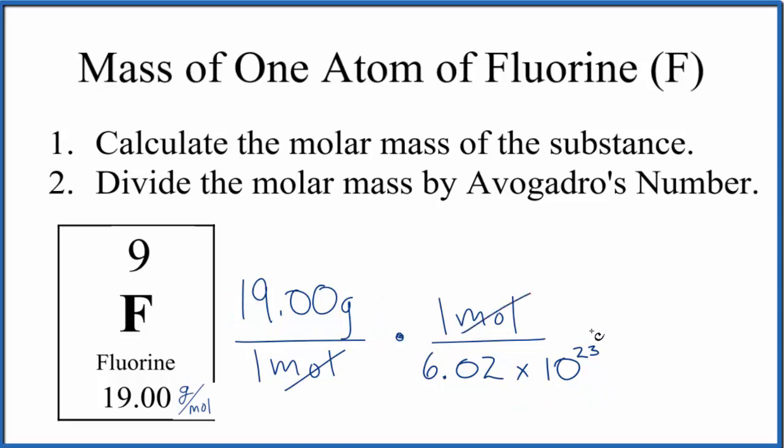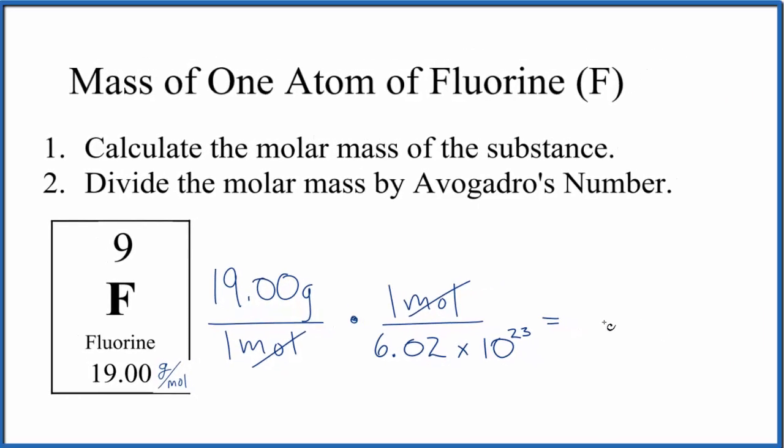But if we do it this way, we have moles on the top and the bottom, they'll cancel out. Then we get left with these grams here, so we know we did it right. When we do the math, we get 3.16 times 10 to the negative 23rd grams.